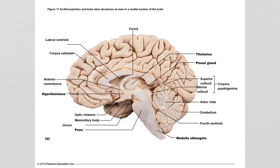Here is the cerebellum. When you cut it open, it looks like a tree on the inside — this is named the tree of life, or in Latin, arbor vitae. On the anterior side, we see the pons and the medulla oblongata.